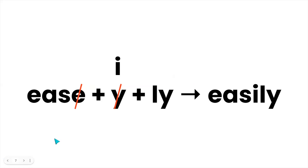This would be read as: E-A-S-E plus Y plus L-Y is rewritten as E-A-S, replace the E, toggle the Y to I, L-Y — easily.